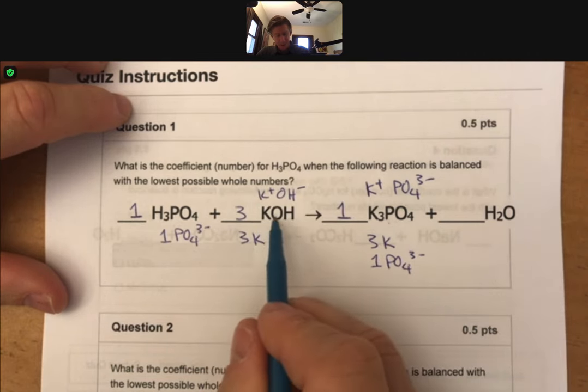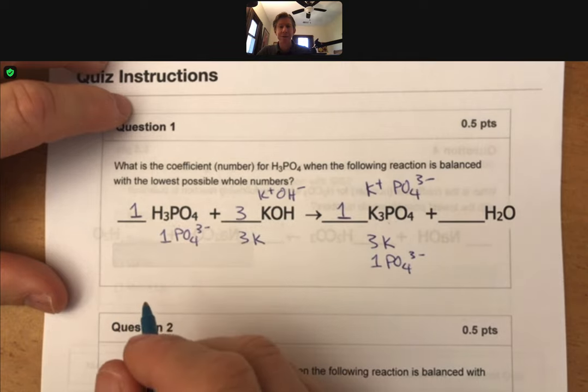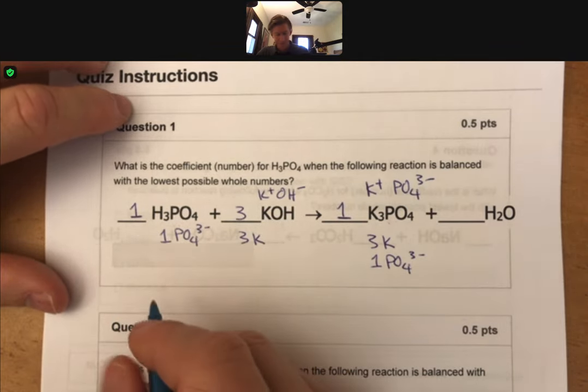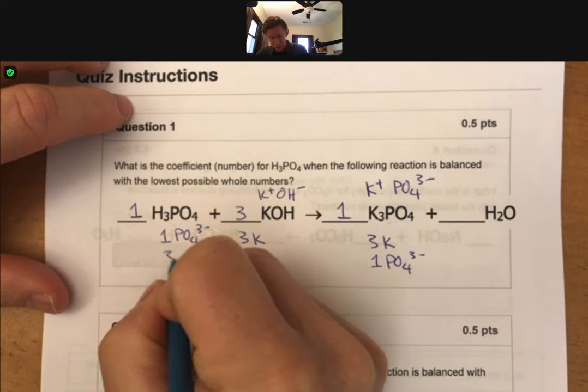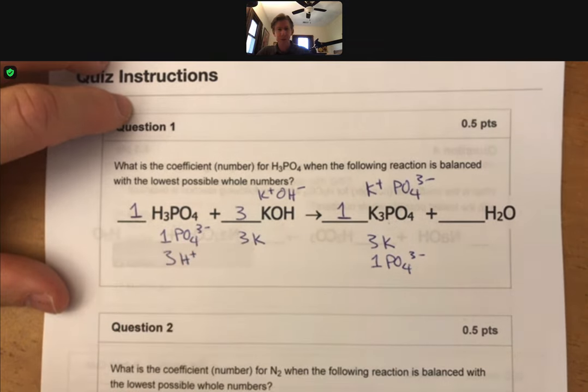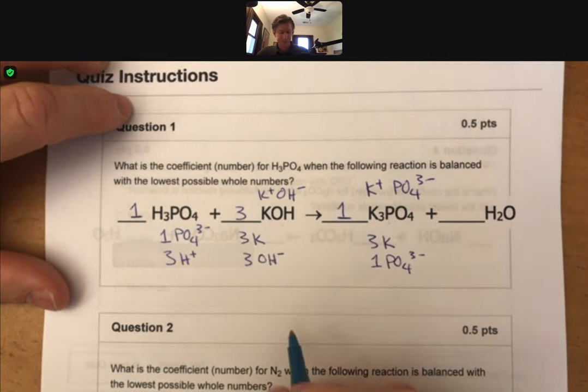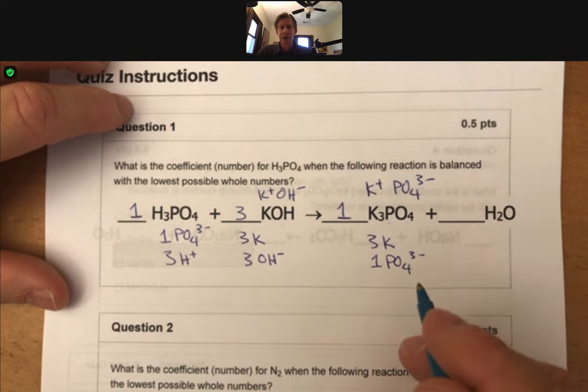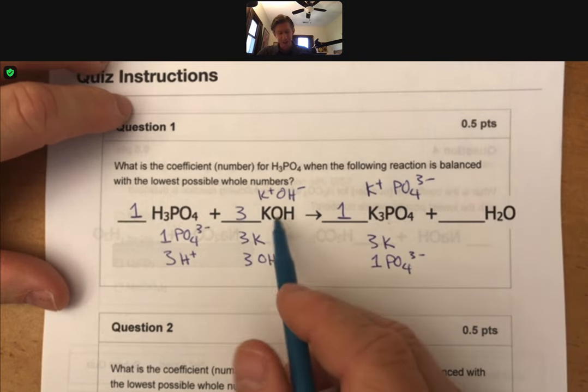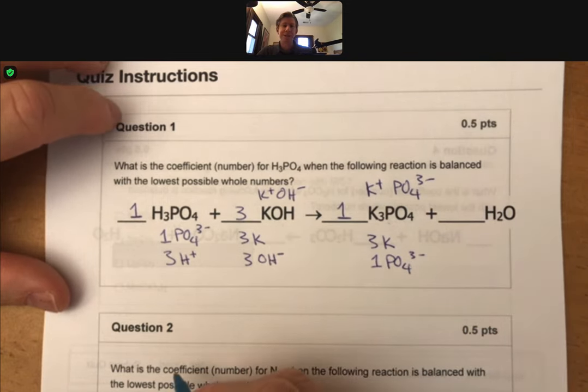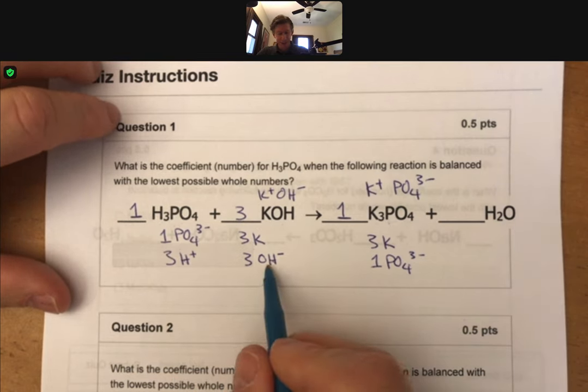And so now looking at the other atoms or ions in here, I also have 3 H's, which we can also call 3 H+. And I have 3 OH⁻ or just OH. I think it's most helpful to balance them together.